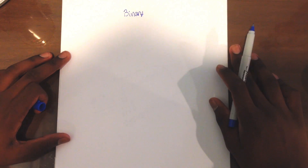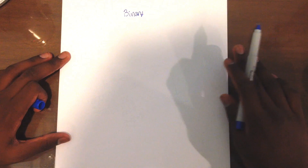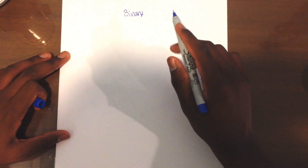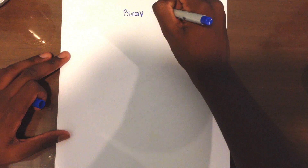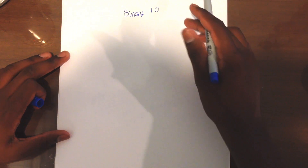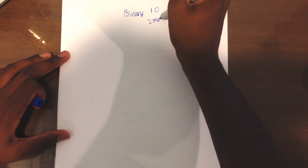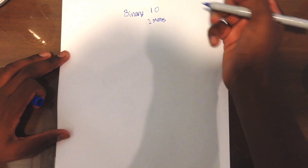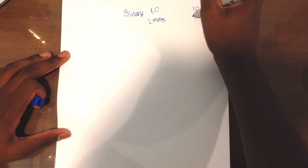Today we're going to be talking about the binary system. The binary system is important because it's the way that CPUs and computers store all their values. It works entirely off 1 or 0. This is not a very powerful system because there are only two possible states, whereas in our decimal system there are ten possible states.